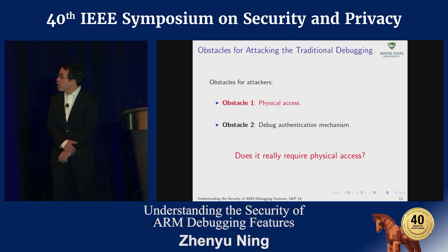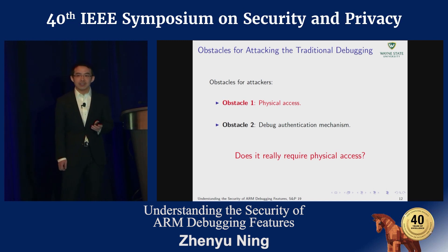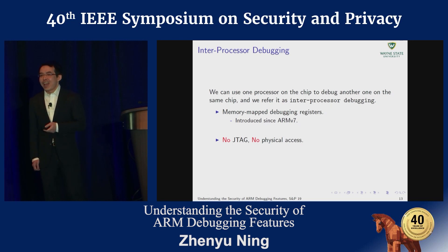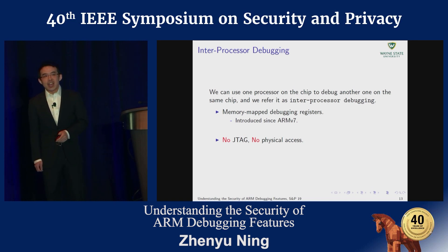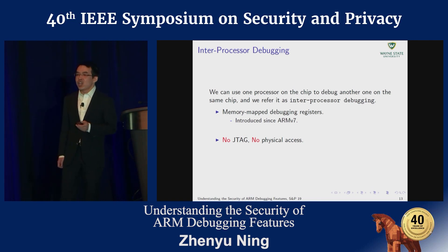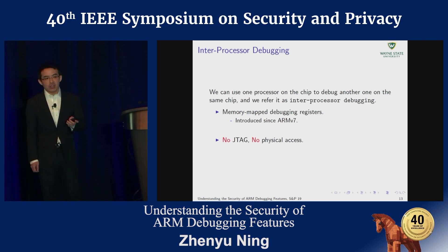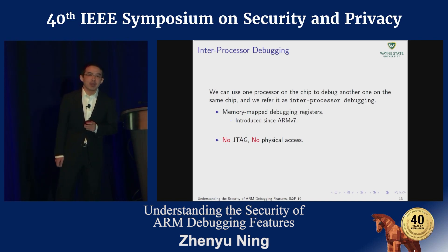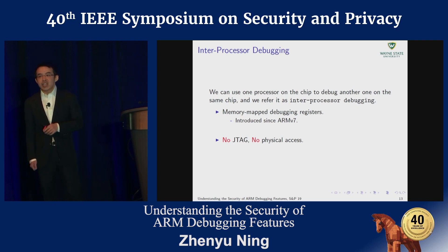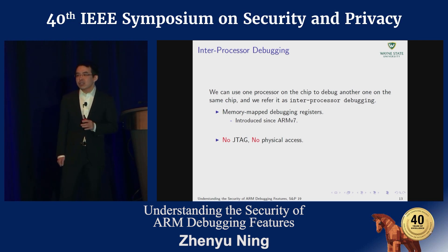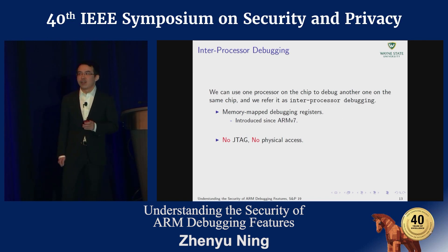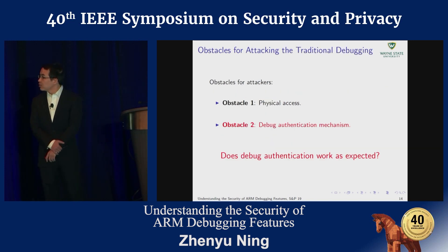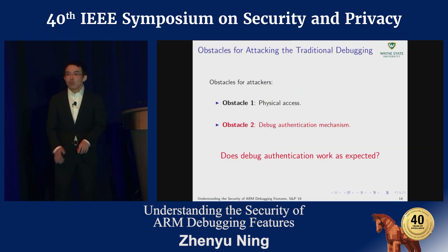First, does it really require physical access to do the hardware debugging? The answer is no. We can use one processor on the chip to debug another processor on the same chip. We reference this as inter-processor debugging. In the ARM architecture, inter-processor debugging is achieved by the memory-mapped debug registers, and it does not require any J-Hack cable or physical access. Second, does the debug authentication mechanism really work as expected?